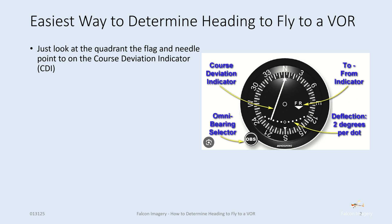The easiest way to go about this is just look at the quadrant the flag and needle point to on the course deviation indicator. It sounds a little easier said than done, but it really is very easy.